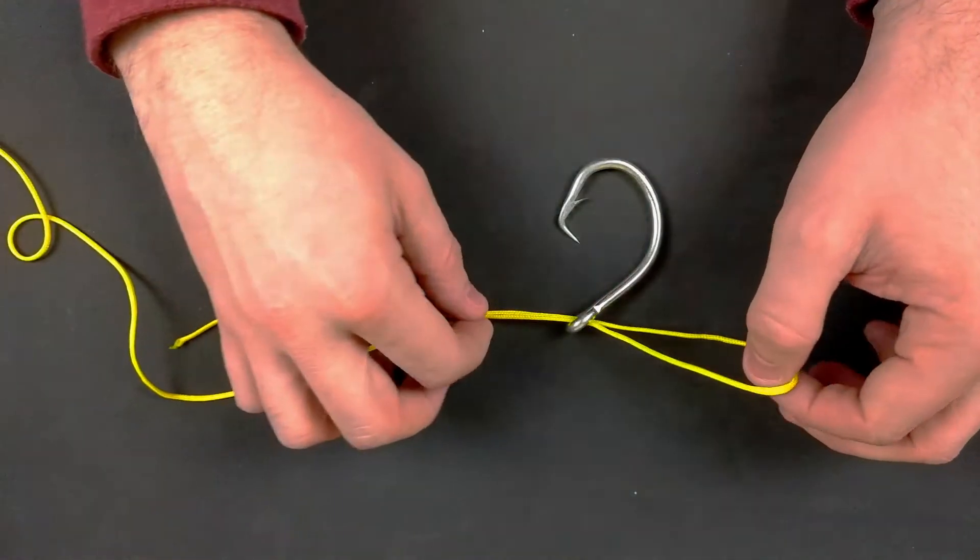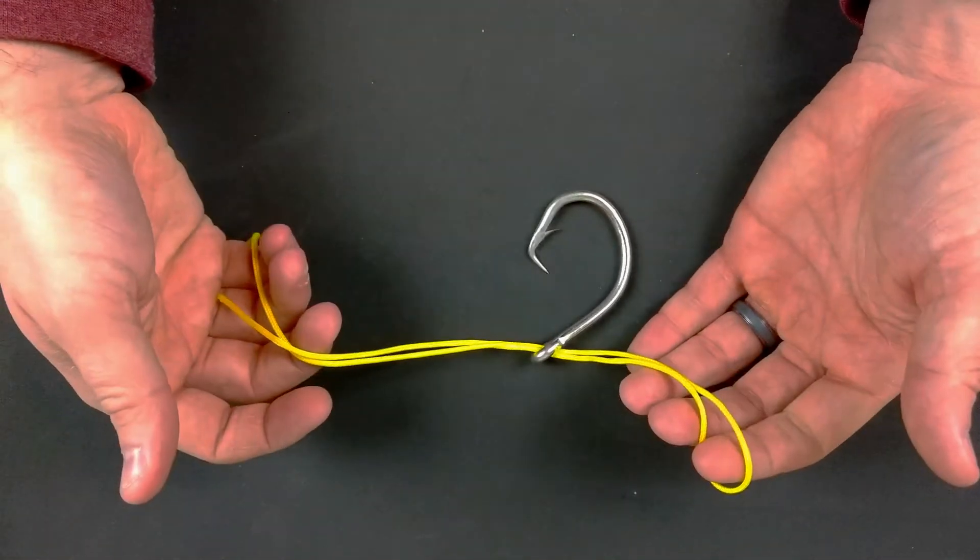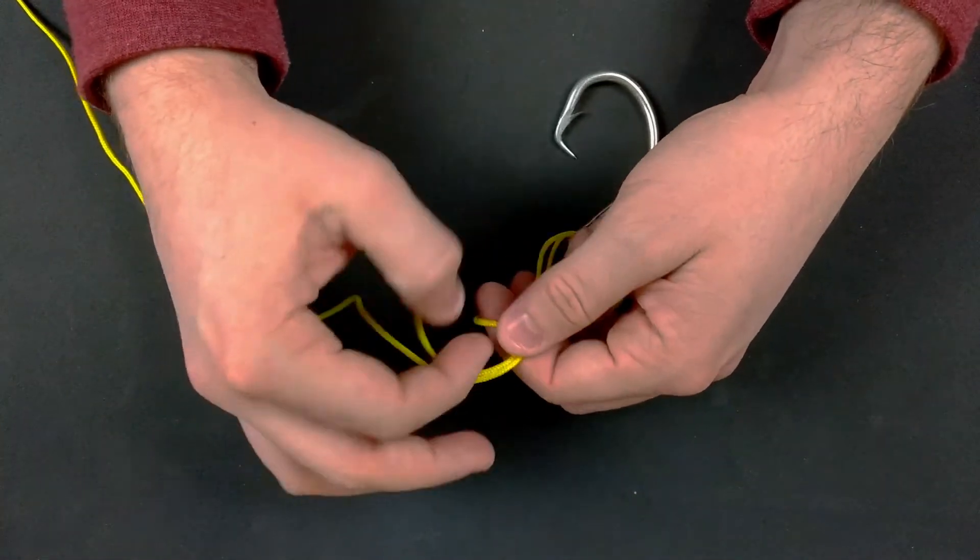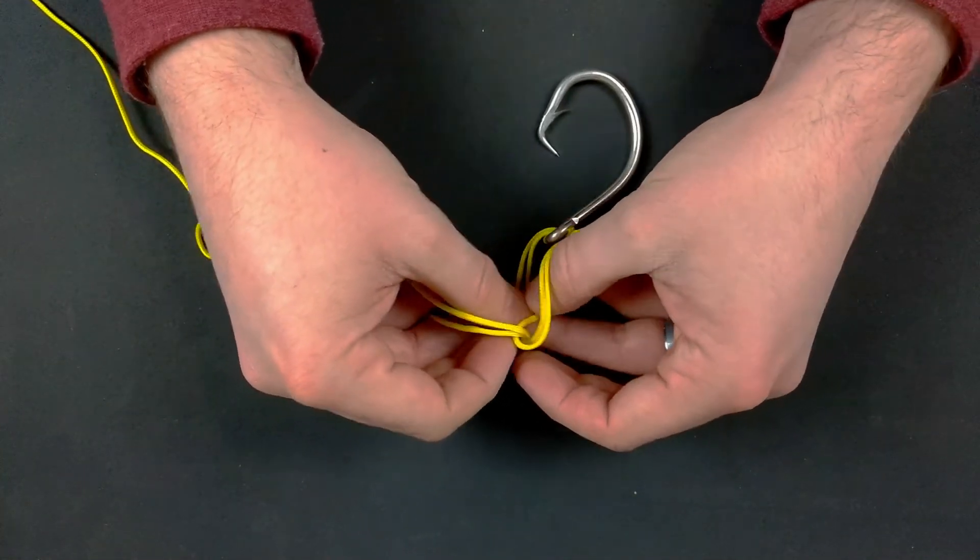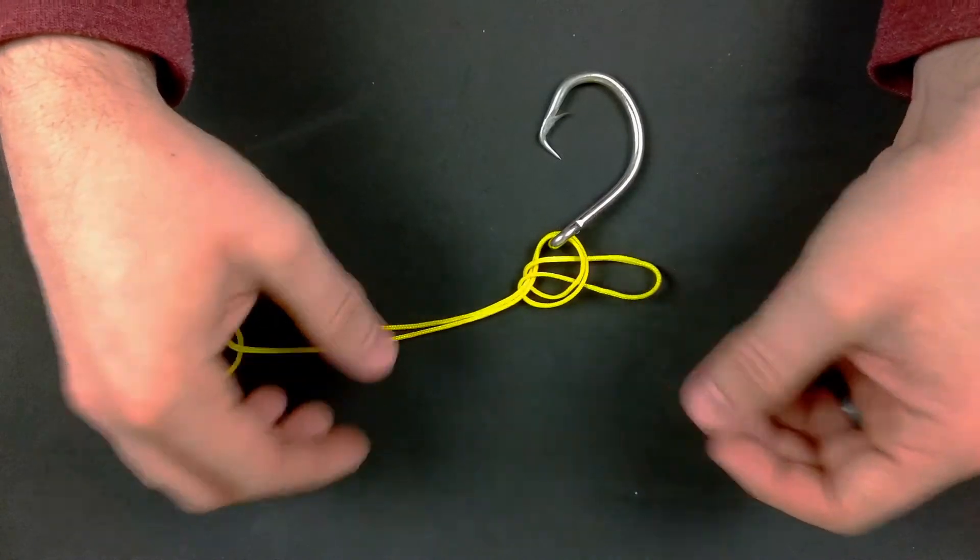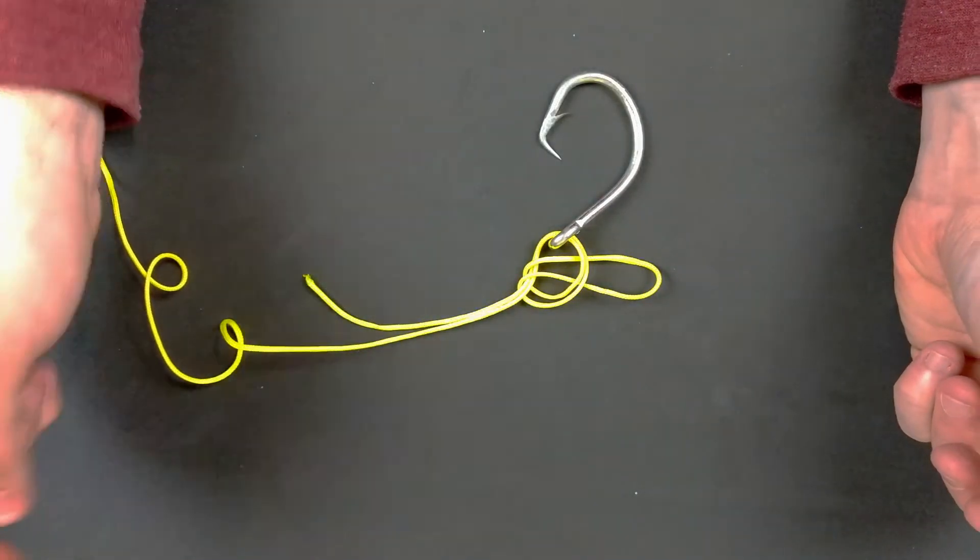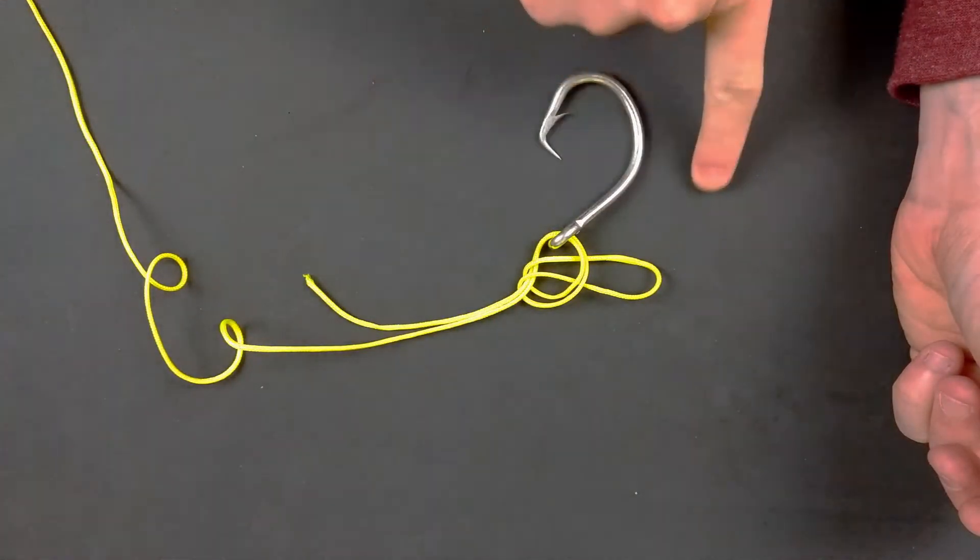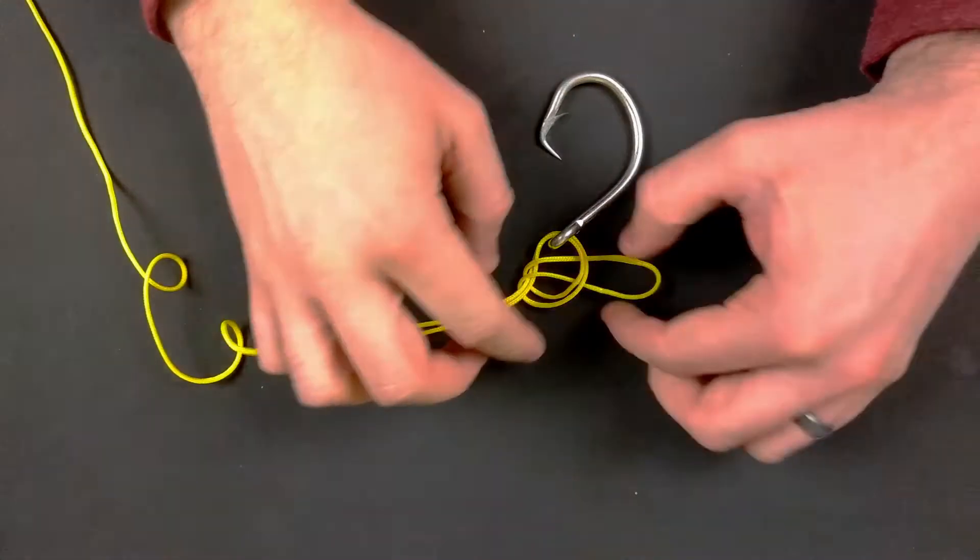This next step is crucial. We make sure we tie a clean overhand knot, as shown with the tag end that is rounded coming through. And we're going to loop that around the hook point, which is going to secure us.